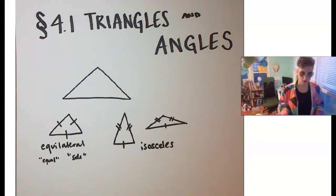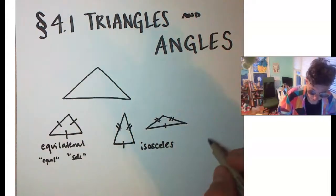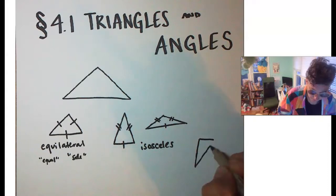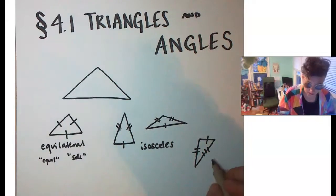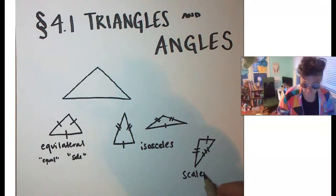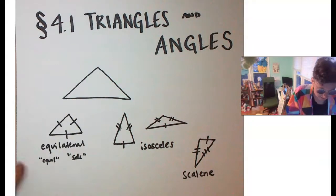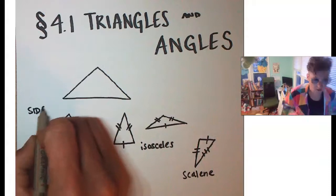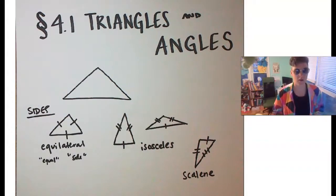Or we could have the third option where all three sides are different lengths — this is called a scalene triangle. Those are the three ways to classify a triangle by its sides. Now let's talk about how we can classify triangles by their angles.